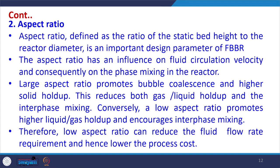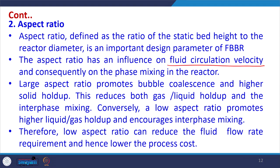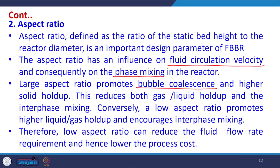The second important design parameter is the aspect ratio, defined as the ratio of the static bed height to the reactor diameter. It influences the fluid circulation velocity and consequently the phase mixing in the reactor. A large aspect ratio — where bed height is larger relative to reactor diameter — promotes bubble coalescence and higher solid-liquid hold-up, reducing both gas and liquid hold-up and interface mixing. Conversely, a lower aspect ratio promotes higher liquid-to-gas hold-up and encourages interface mixing, thereby reducing fluid flow rate requirements and lowering process cost.